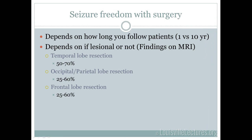Seizure freedom rates after surgery vary depending on follow-up length and whether the MRI shows a lesion. For temporal lobe resections, the most common in adults, seizure freedom rates are about 50% to 70% — far better than less than 5% with medications alone. For parietal, frontal, or occipital lobe resections, the data is 25% to 60%, a wider range depending on follow-up duration and lesional status. Patients understandably get nervous about brain surgery, but the difference compared to just changing medications is dramatic — this is standard of care.